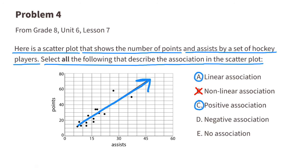Since it's a positive association and moving upward, that means it's not a negative association moving downward. So I cannot select negative association. I also cannot select E, no association, because there is an association. There's a linear association and a positive association.